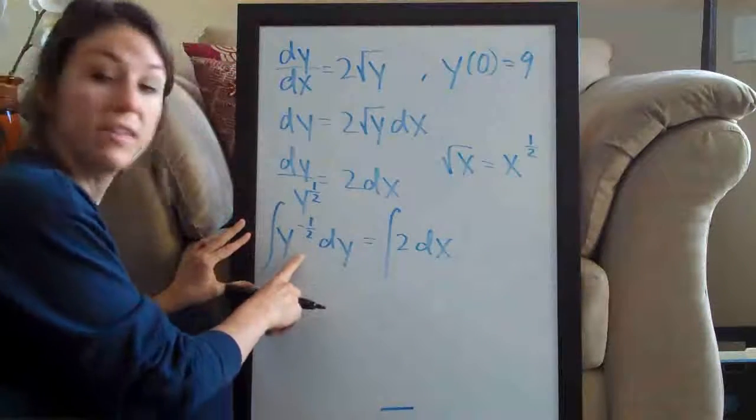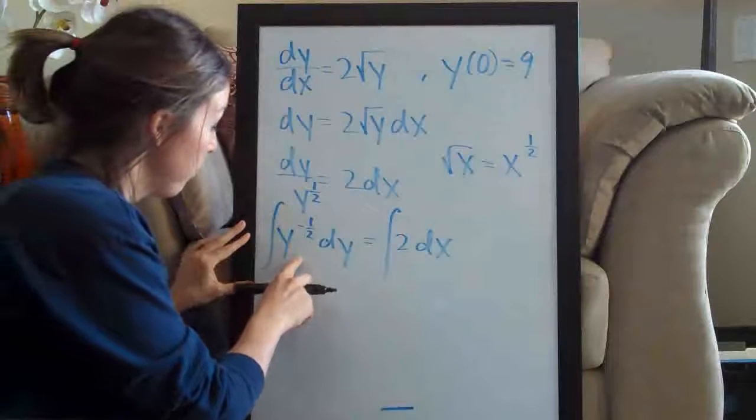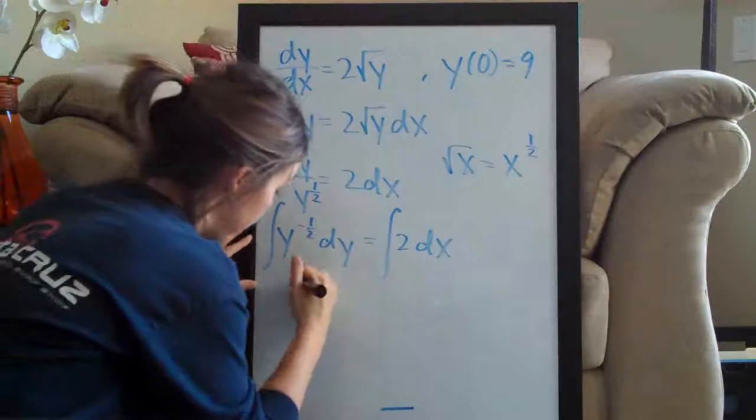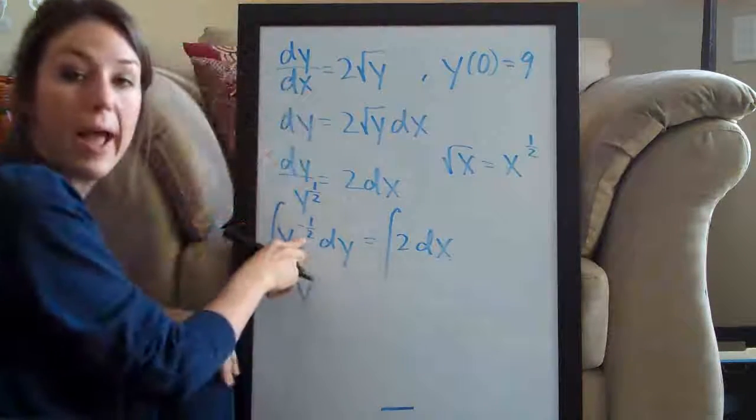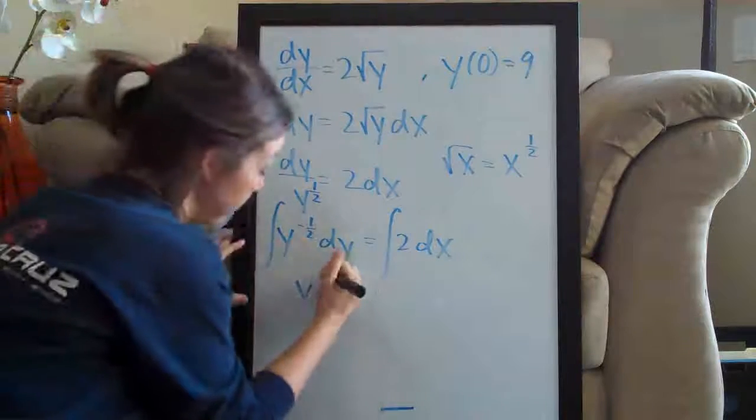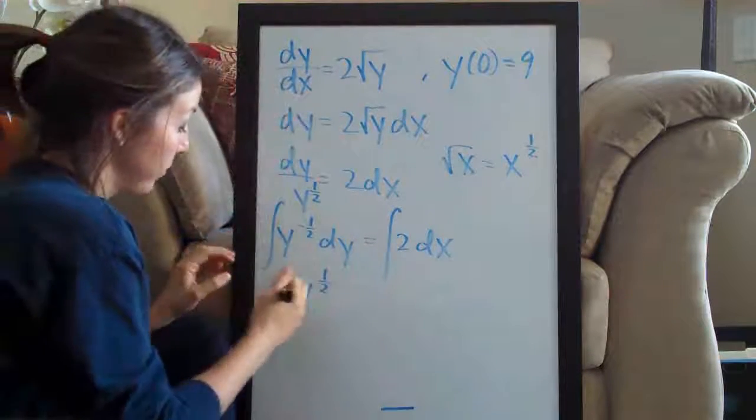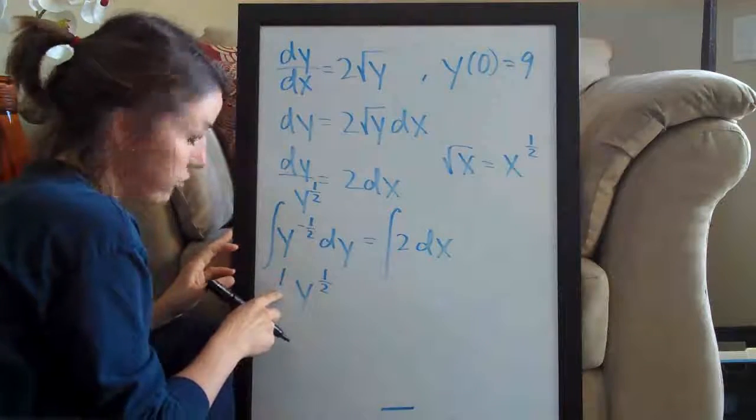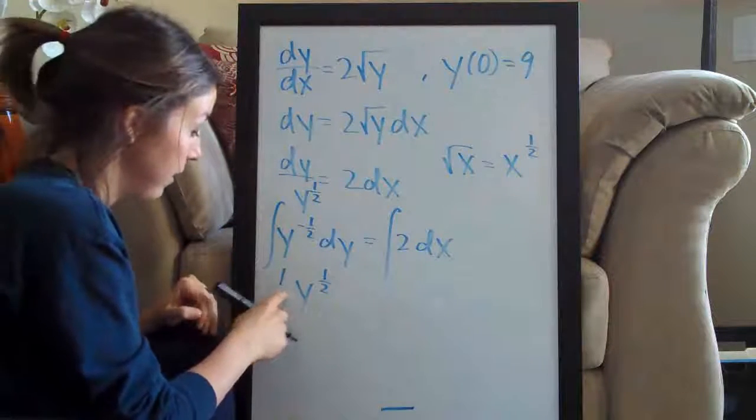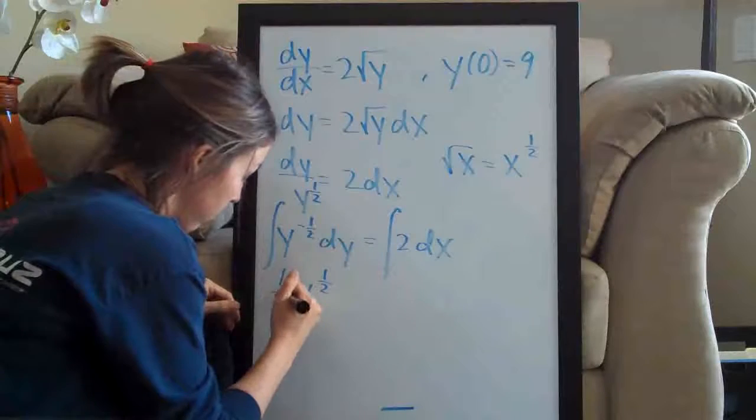To take the integral of the left side, we add one to the exponent. So y negative one half plus one is positive one half. And then we divide the coefficient, which is one, by the new exponent, which is one half.